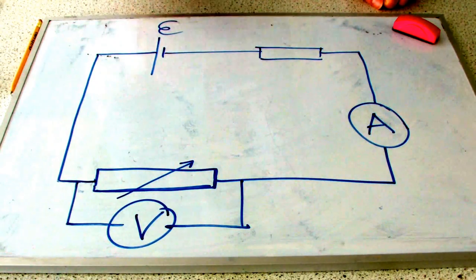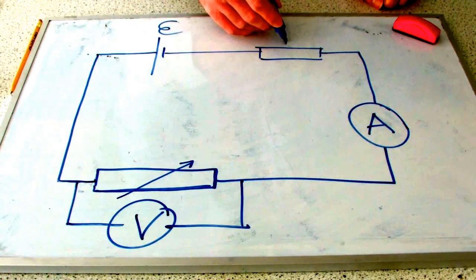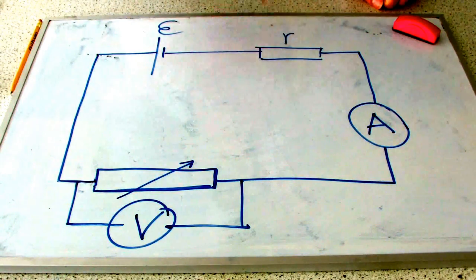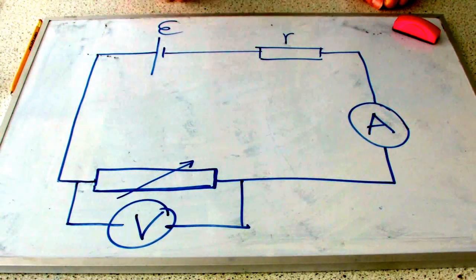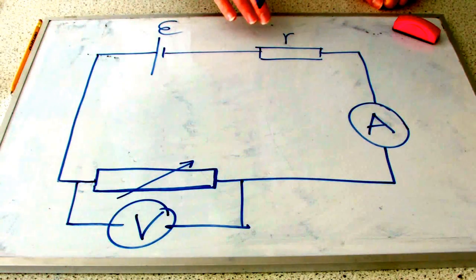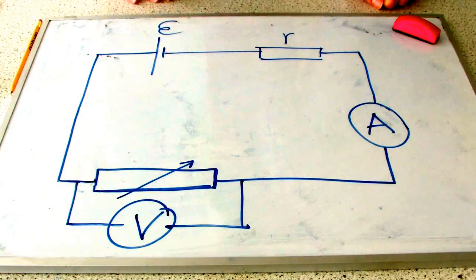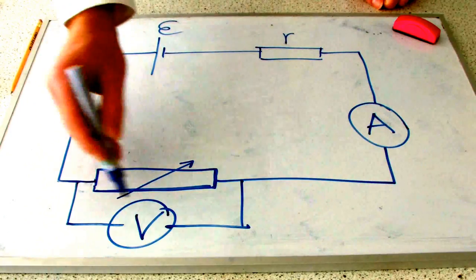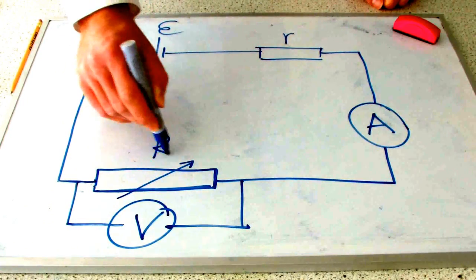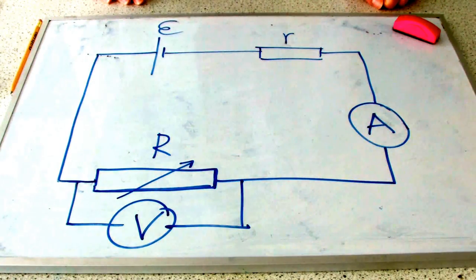This is going to model our internal resistance. We're actually kind of faking it a little bit here and using an external resistor to model our internal resistance. And this is our variable resistance. This we're going to call our load resistance, R, capital R.